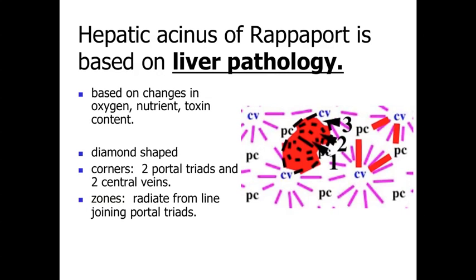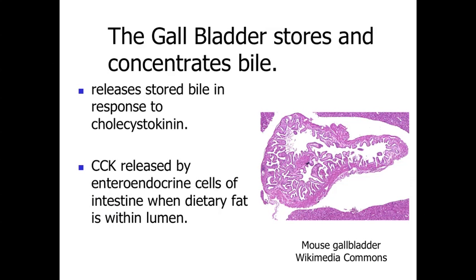Finally, we have the hepatic acinus of Rappaport, based on liver pathology. This is a diamond-shaped structure with portal triads at one axis and central veins at the other. It is based on the idea that blood released from the portal canals carries the highest level of a toxin to the cells closest to it, with progressively lower levels further away. This can be used to explain liver pathologies.